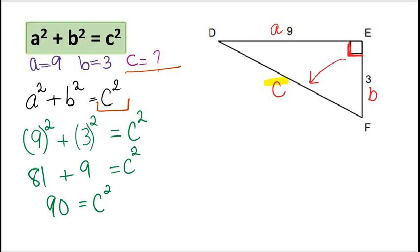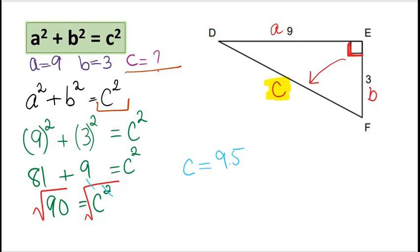So we need to find c, but in the formula we have c squared. The opposite of squaring is taking the square root. So we take the square root of both sides. The square and the square root cancel each other out, so we're left with c equals the square root of 90, which is 9.5. So the side length of the hypotenuse is 9.5.